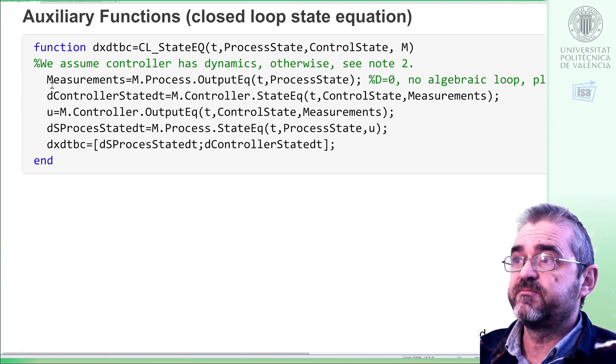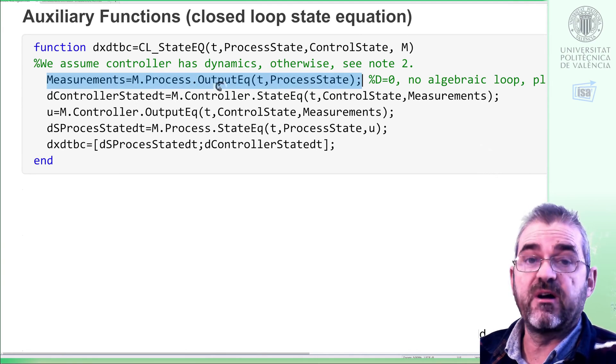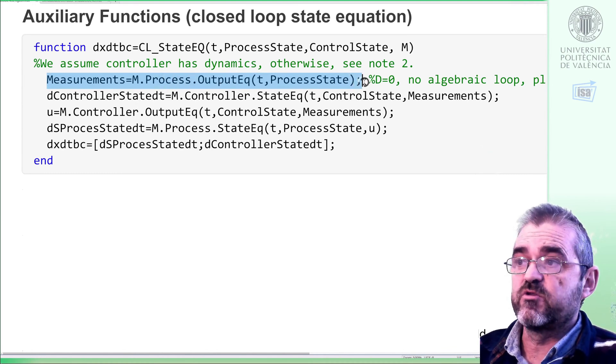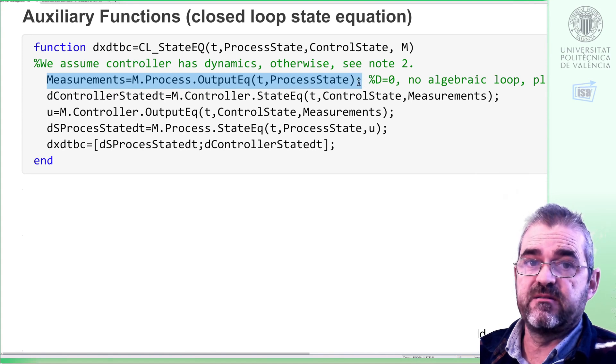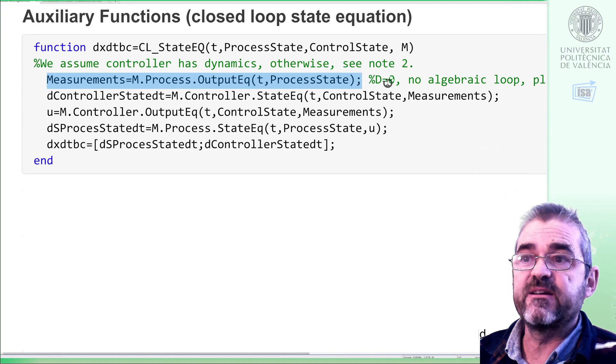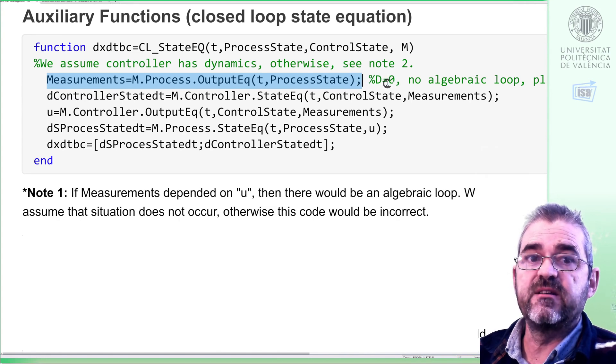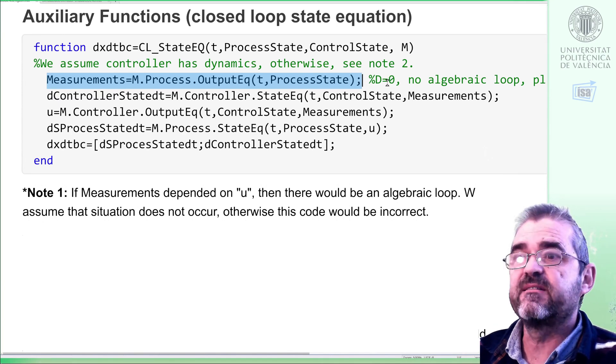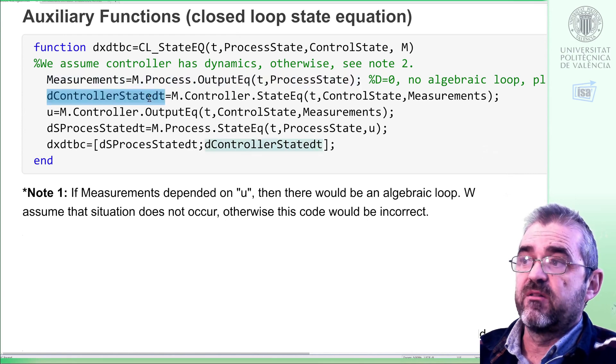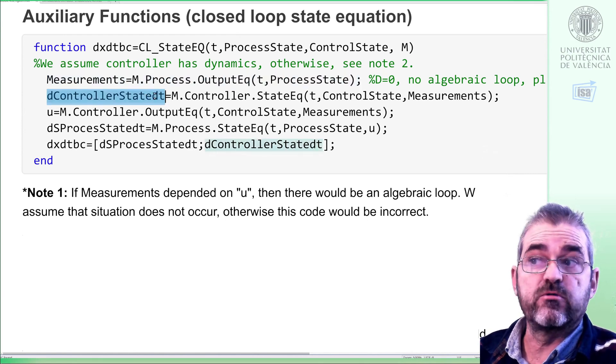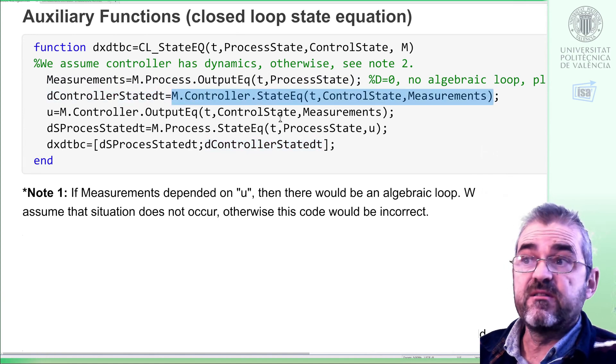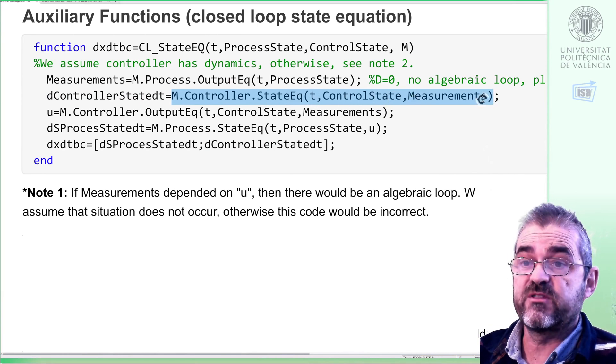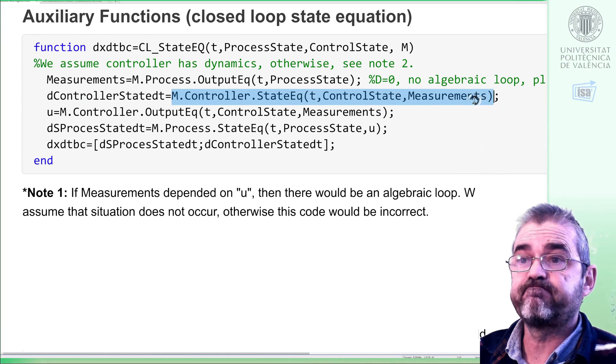To simulate a control loop, we first simulate the measurements, which is the output equation corresponding to the controlled process, and we will assume that those measurements do not depend on input. The process matrix D, if this were a linear one, is zero. No direct input to output feedthrough, because otherwise this code will be incorrect. Once we have the measurements, then we will compute the derivative of the controller state, which is just evaluating the controller state equation with this clock, with the control state at this moment, and the measurements, which are the input to the controller.